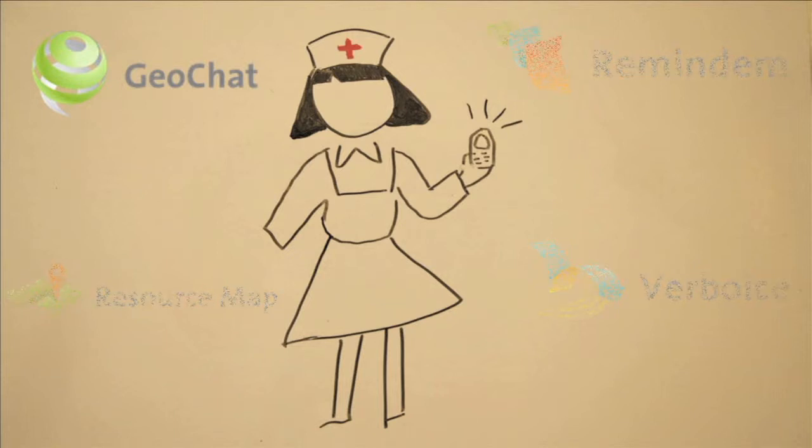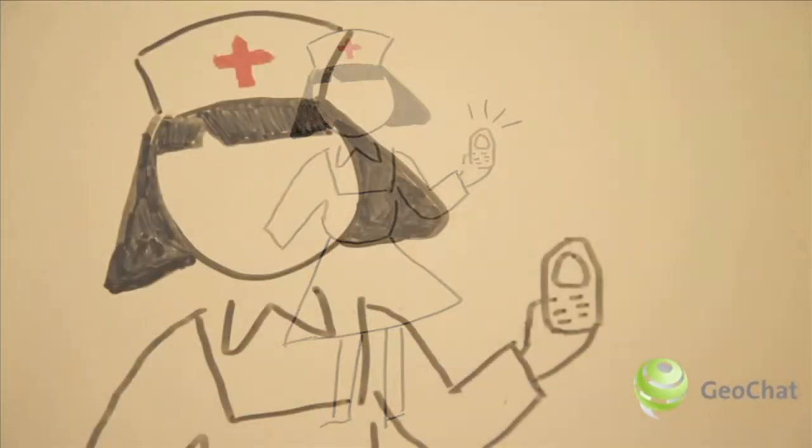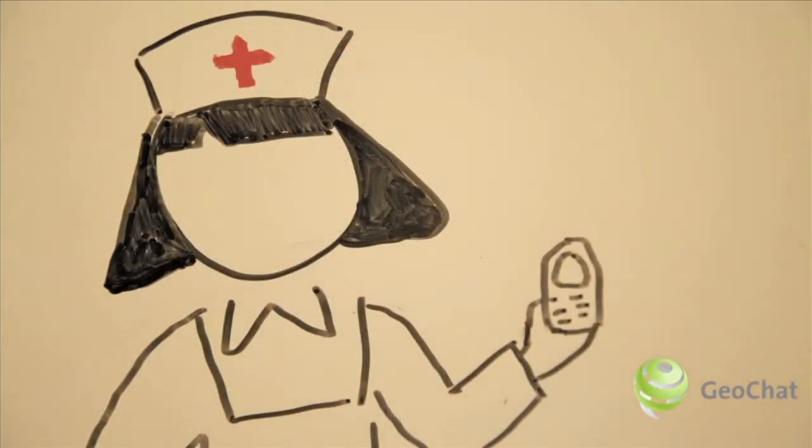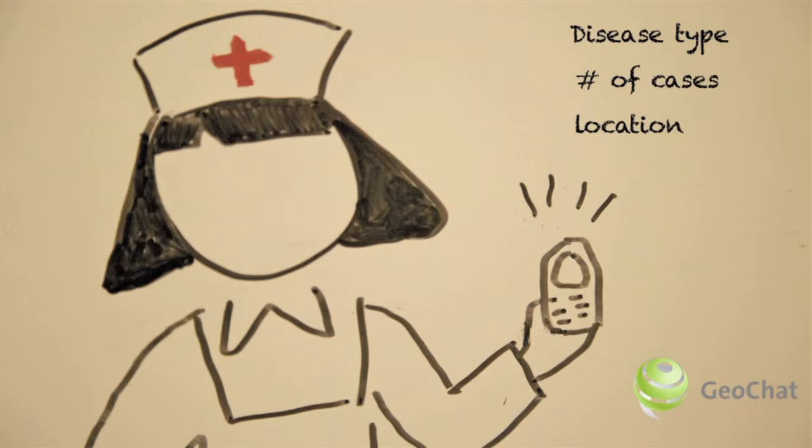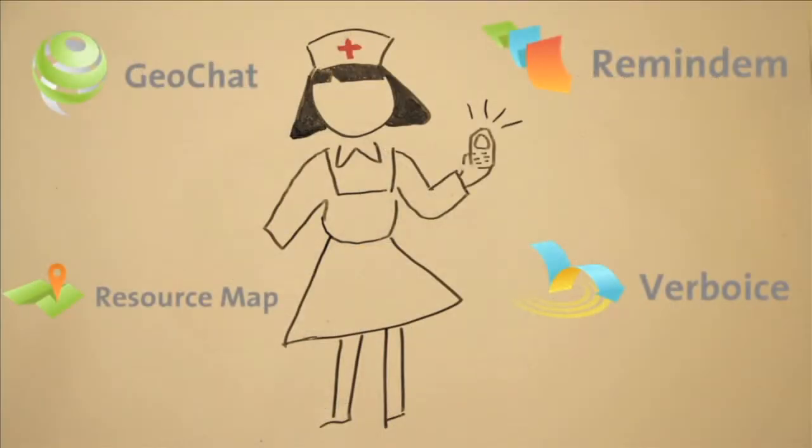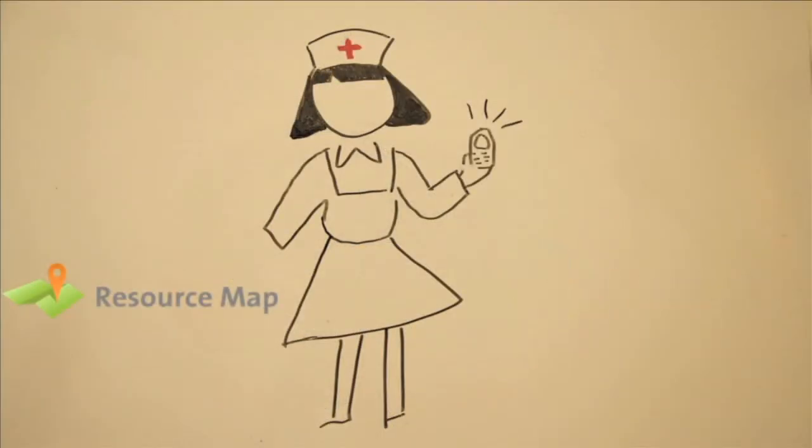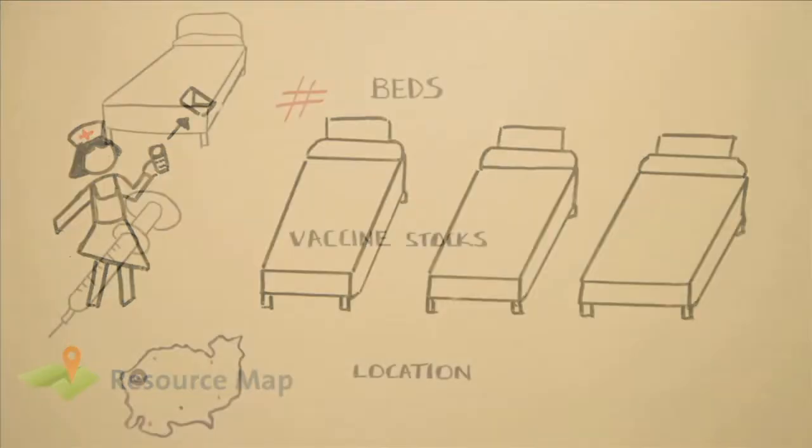She uses GeoChat to send a daily update to report the conditions of the patients who visited her health center. The health worker then uses Resource Map to tell her headquarters what resources she has available at her health center.